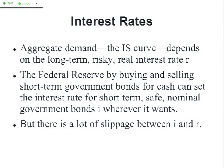Where does this risky, real, long-term interest rate come from? What determines it? It's set in financial markets — a bunch of people buying and selling bonds and other securities for a price, and associated with each price for a bond is an interest rate. The Federal Reserve intervenes in financial markets every single day, buying and selling short-term government bonds for cash. Experience has taught us that the Federal Reserve can set the interest rate for short-term, safe, nominal government bonds — call that I — wherever it wants.